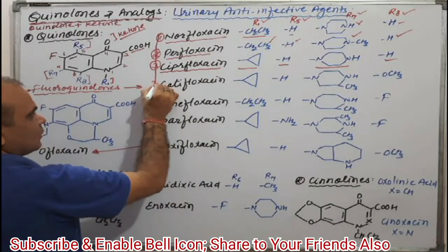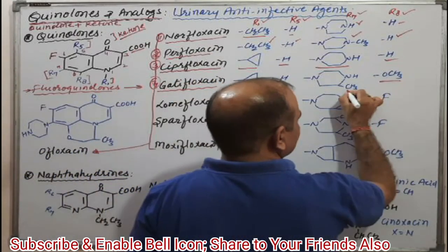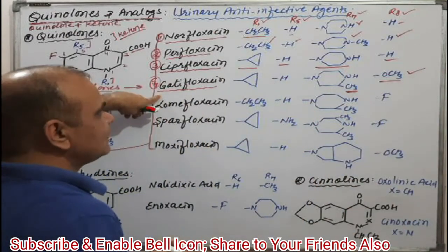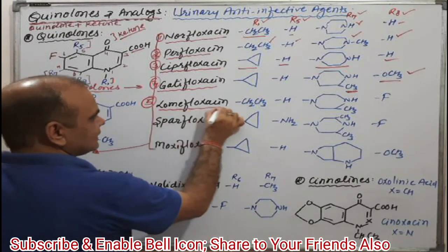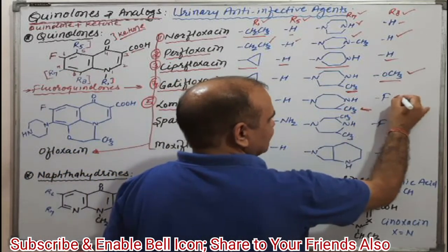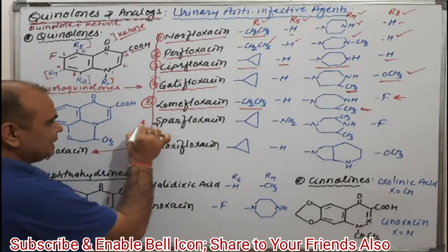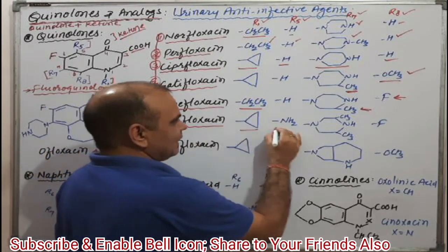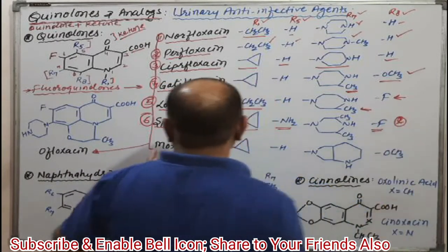The fourth molecule is gatifloxacin, which has a methoxy group as well as a methyl group on the piperazine ring, and a methoxy group at the 8th position. The fifth compound is lomefloxacin, which has a methyl group, and a fluorine at R5 position. Similarly, the sixth drug molecule is sparfloxacin, which has a cyclopropyl group, an amino (NH2) group, as well as fluorine — it is an entirely different molecule.